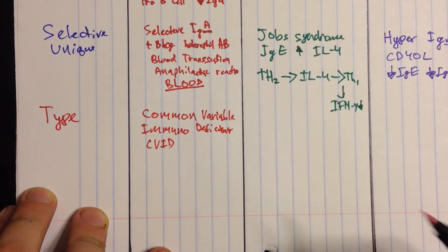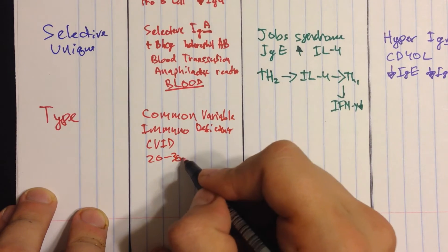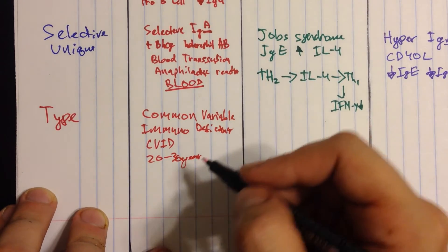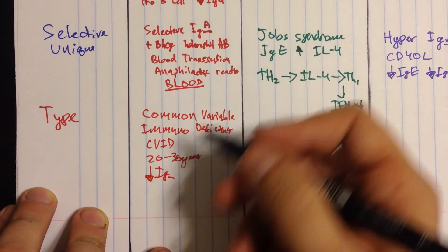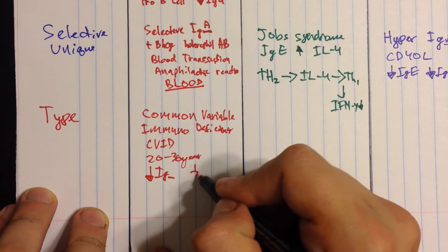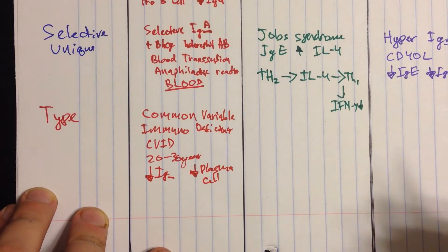And here, it presents in 20 to 30-year-olds, which is like if you see a person of that age presenting with an immuno-deficiency, that should make you think about something. And you have decreased Ig production because you have decreased B cells. And you also have decreased plasma cells, which make antibodies, which makes sense that you have decreased production.